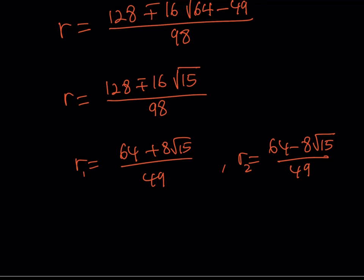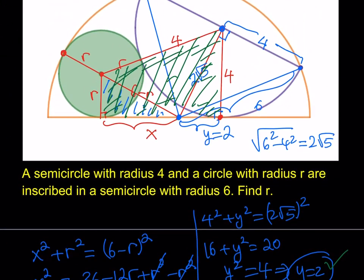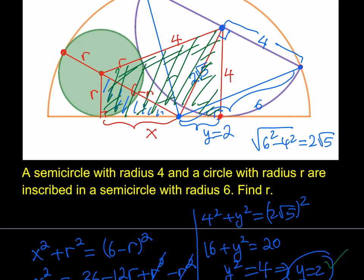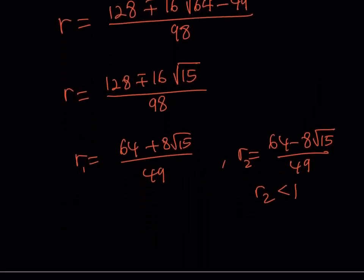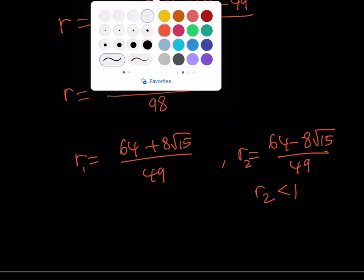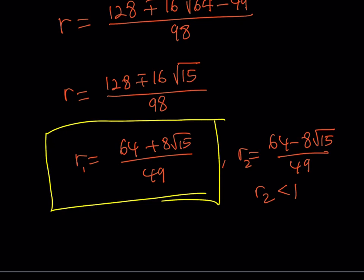The second one is going to be like, this was 64 plus 32. This is going to be like 64 minus 32. It's like 32 divided by 49. Oh. R2 is going to be less than 1. But notice that that's not acceptable because if you look at our picture, it needs to make sense, right? This was drawn accurately on Desmos. So the answer needs to be pretty close to 2. So just quick visual inspection tells us that. So we're going to go by the first one, which is kind of surprising for me. But anyways, that's what it is. So our solution is 64 plus 8 root 15 divided by 49, which is the radius of the circle we're looking for.